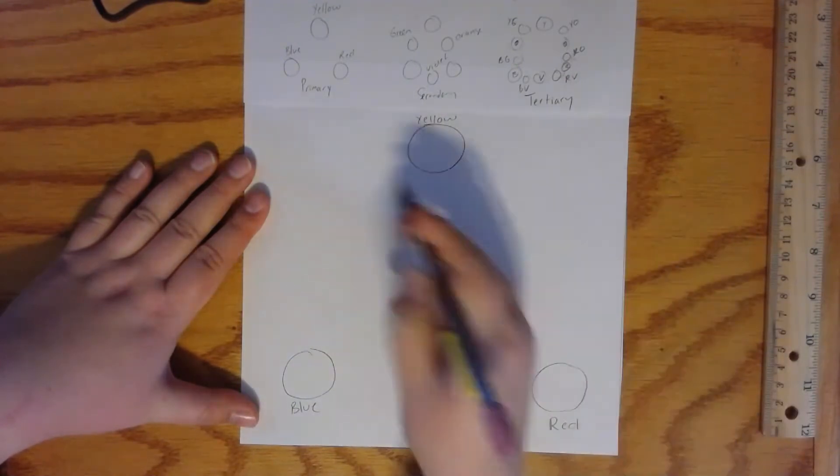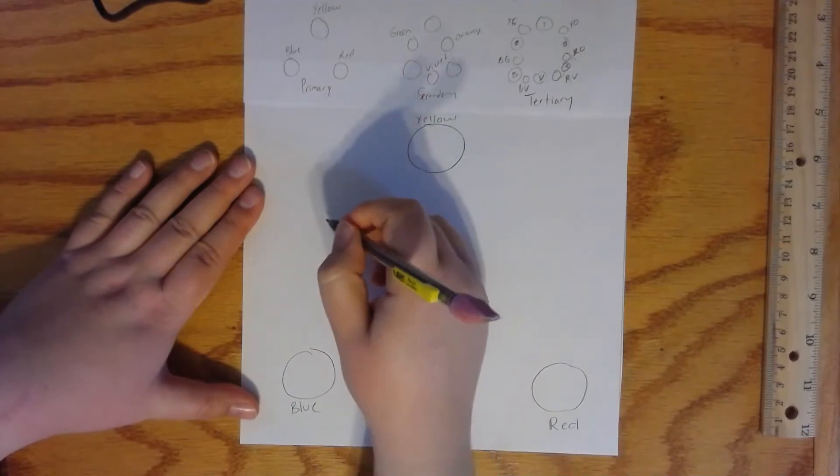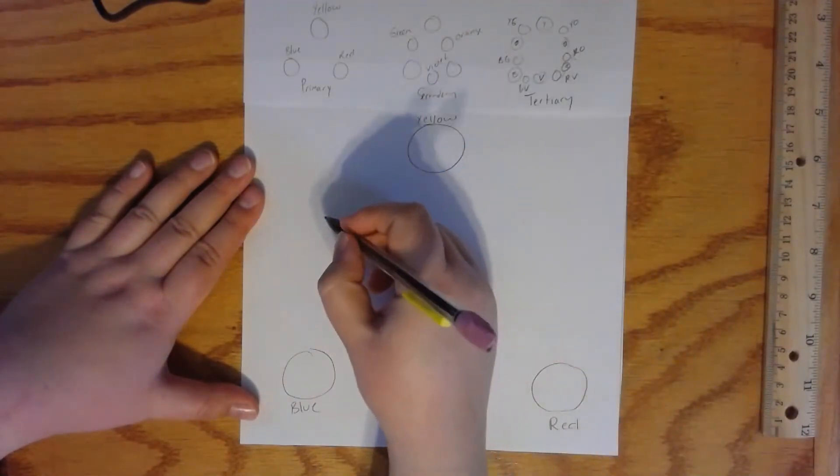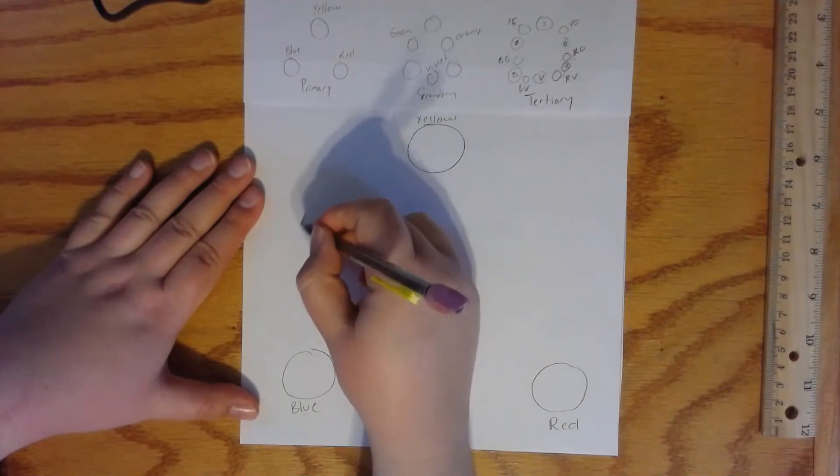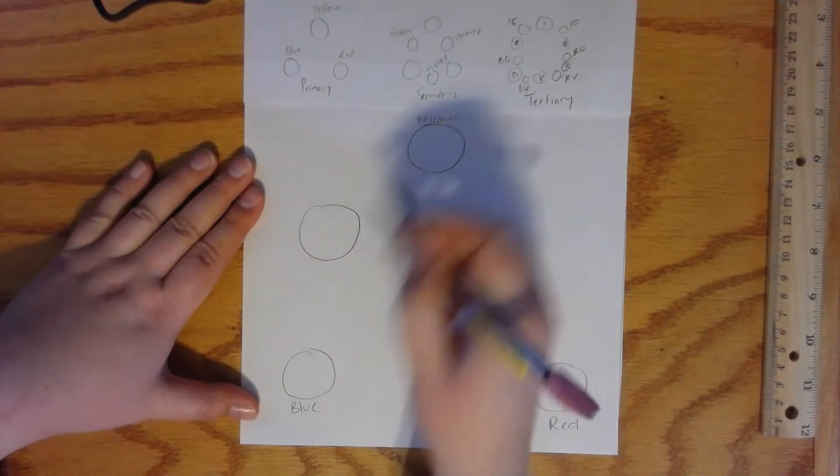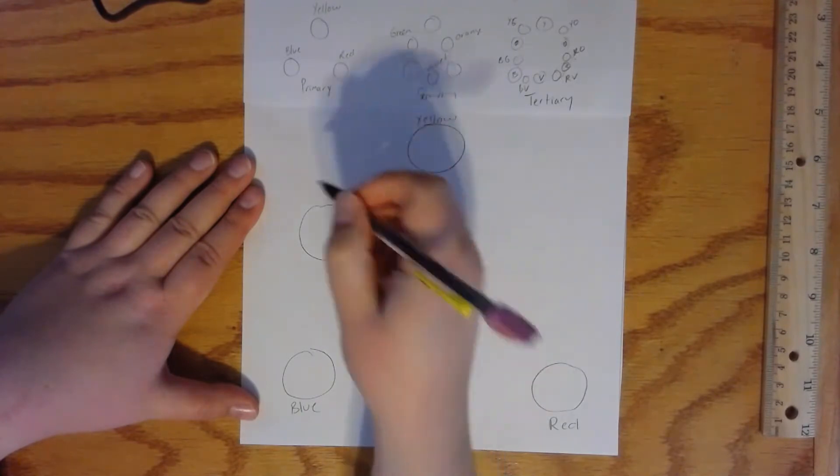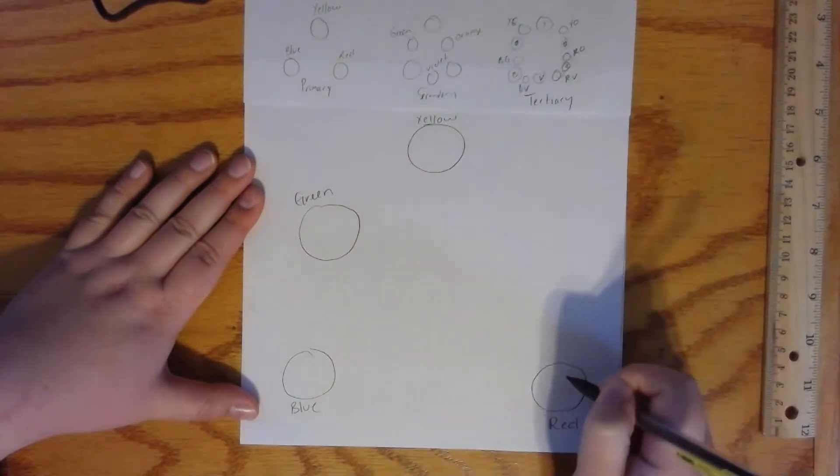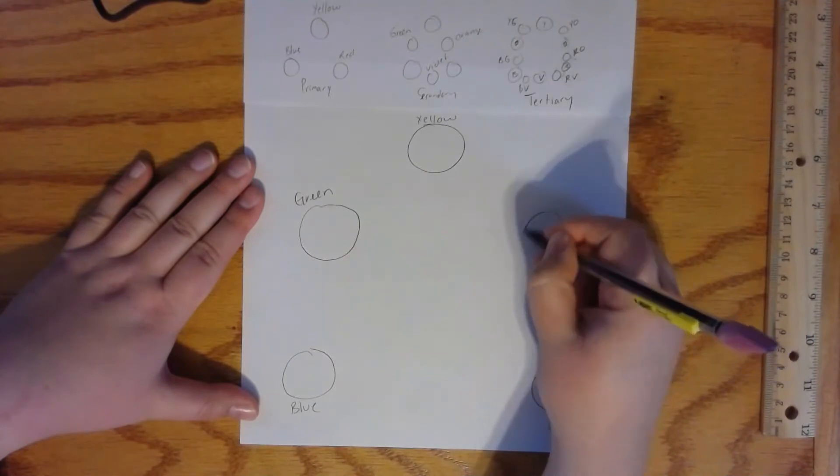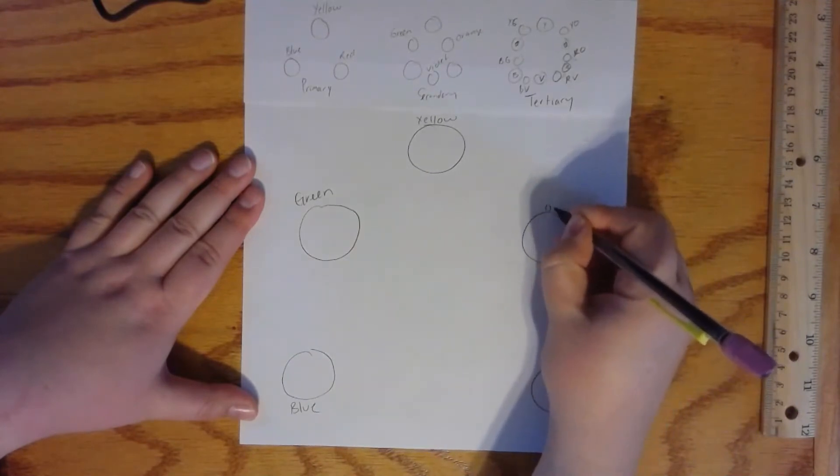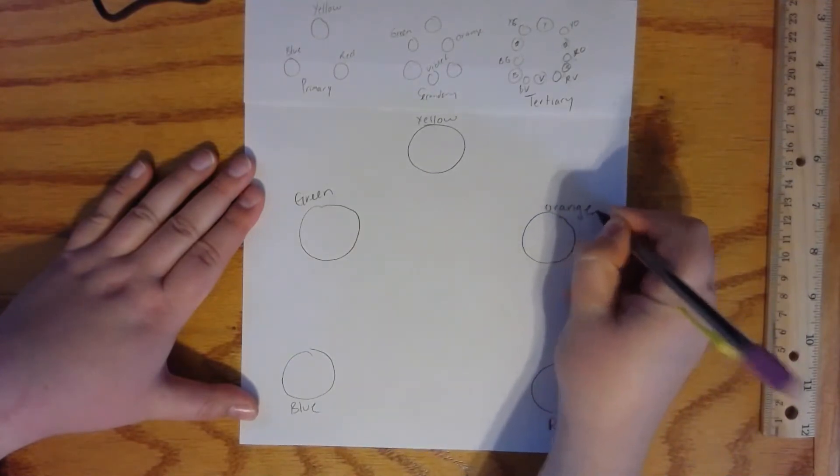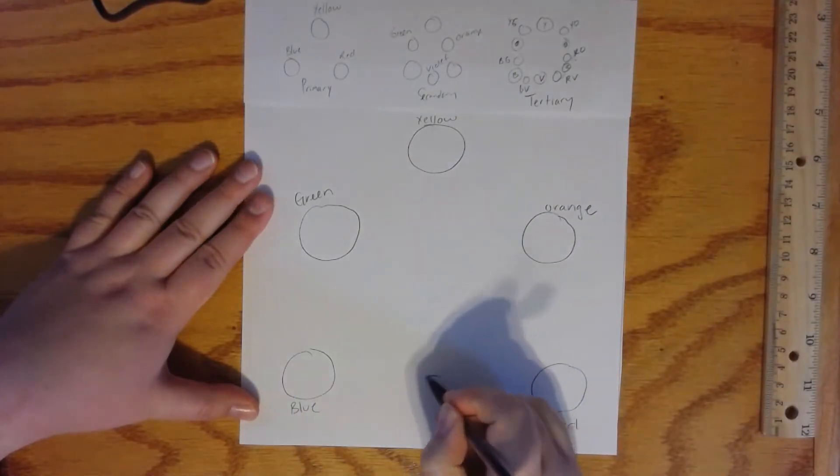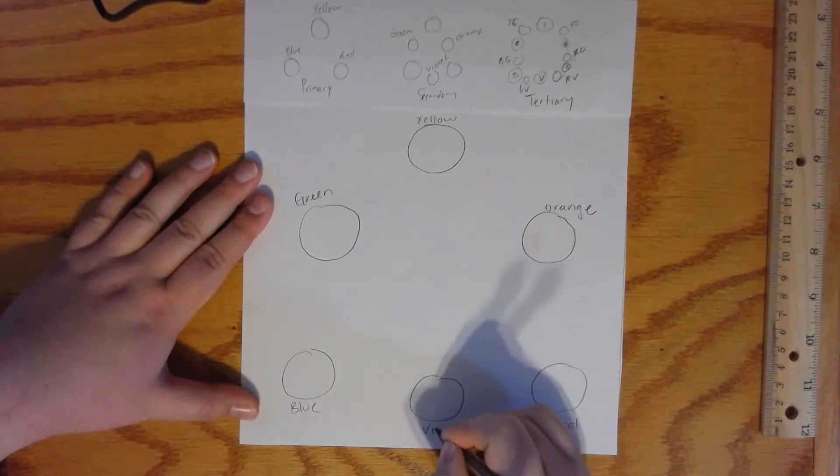Then in between those I'm going to make my secondary. And it's okay if when you draw it doesn't end up being a perfect circle as long as things are in the right place. So between yellow and blue should be the secondary green. Between yellow and red should be the secondary orange. And then between blue and red should be the secondary violet, also known as purple.